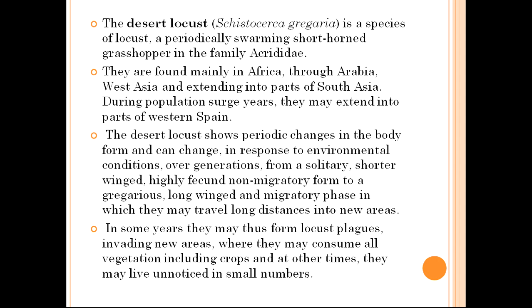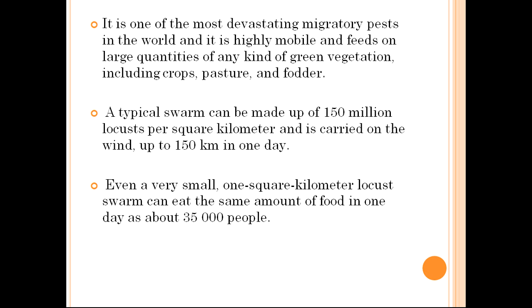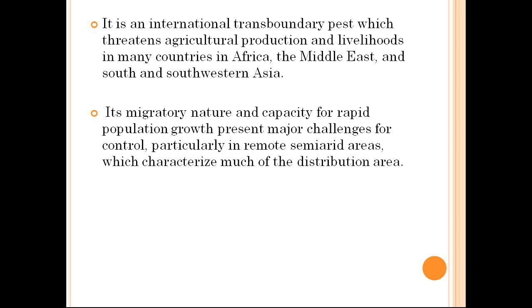In some years they form locust plagues, invading new areas and consuming all vegetation including crops. It is one of the most devastating migratory pests in the world, feeding on large quantities of any kind of green vegetation including crops, pasture, and fodder. A typical swarm can be made up of 150 million locusts per square kilometer and is carried on the wind up to 150 kilometers in one day.